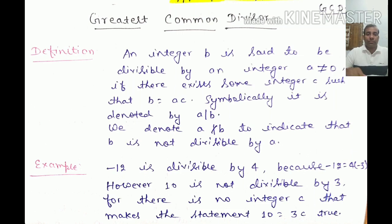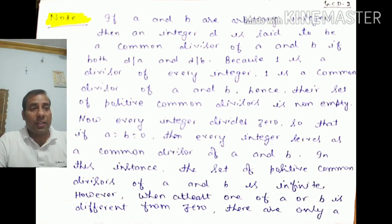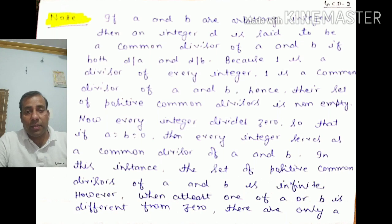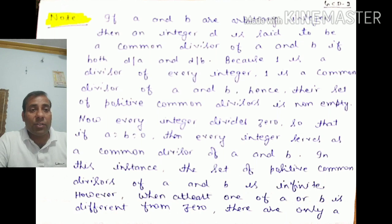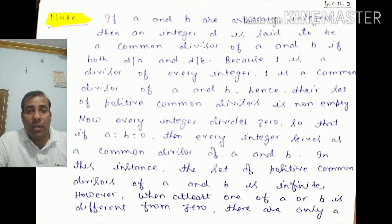If a and b are arbitrary integers, then an integer d is said to be a common divisor of a and b if both d divides a and d divides b. For example, 10 is divided by 2 and 12 is also divided by 2, so 2 is a common divisor of 10 and 12. Since 1 divides every integer, 1 is always a common divisor of a and b, so the set of positive common divisors is non-empty.